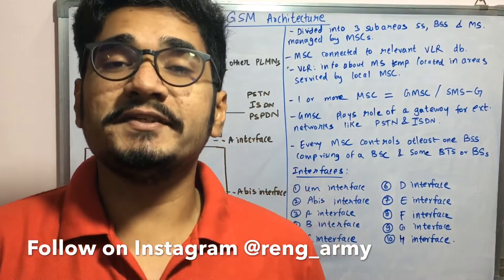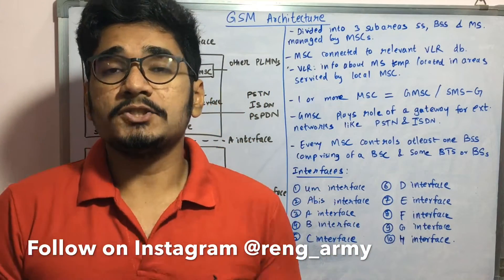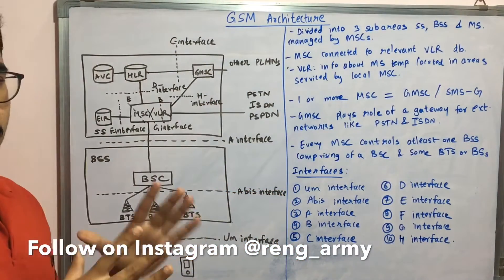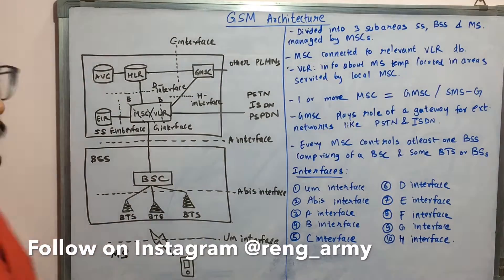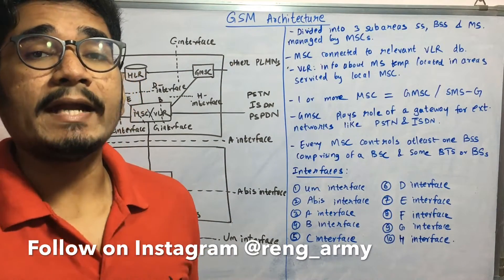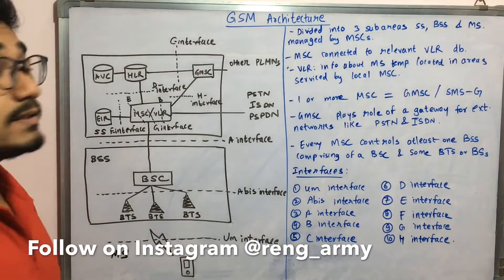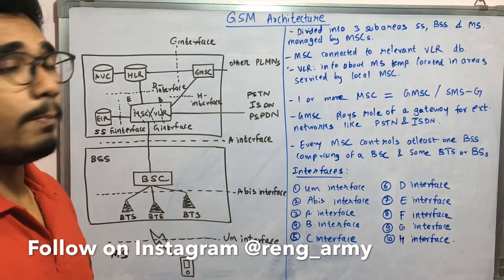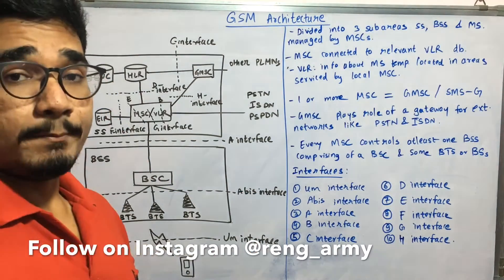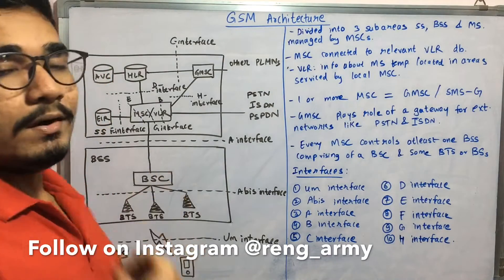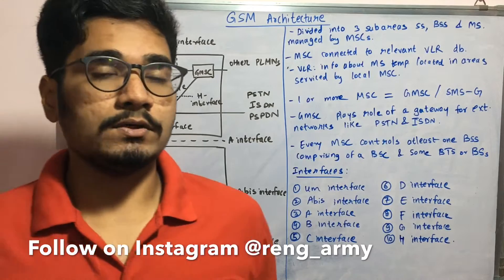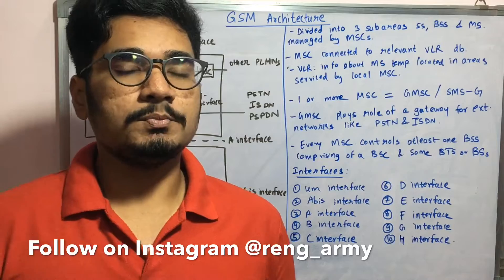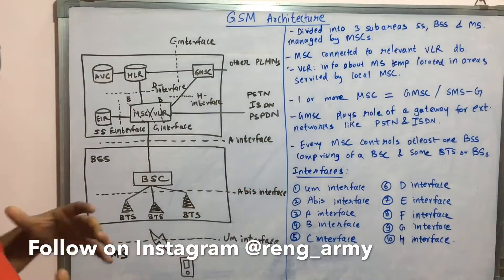Hey guys, welcome back to my channel. Today in this video we'll be seeing the architecture of GSM. This is how the GSM architecture looks like. It is divided into three main categories: the Switching System (SS), the Base Station System (BSS), and the Mobile Station, which are managed by some of the MSCs — the Mobile Switching Centers. We already saw what these various network nodes or system nodes are in GSM.